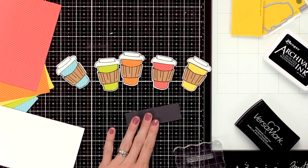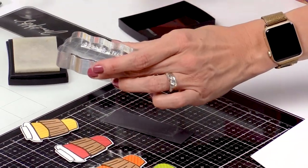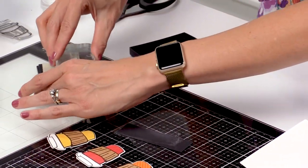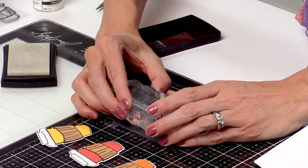I'm going to heat emboss it so I'm going to add some anti-static powder down first. Ink my sentiment up with VersaMark ink and then stamp it on the cardstock.